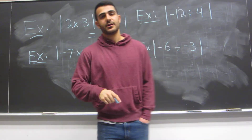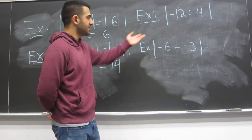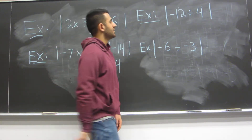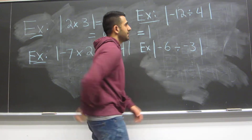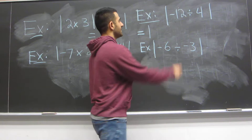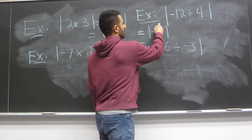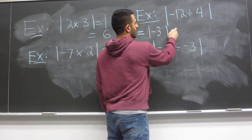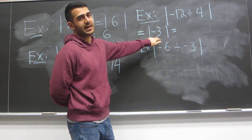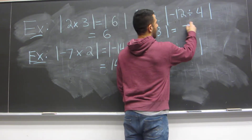Now let's deal with division inside the absolute value. It's not that hard — you already know how to do this, we're just adding the idea of absolute value. We can simplify negative 12 divided by 4, which gives the absolute value of negative 3. We can't simplify any further, so we evaluate: the absolute value of negative 3 is 3.